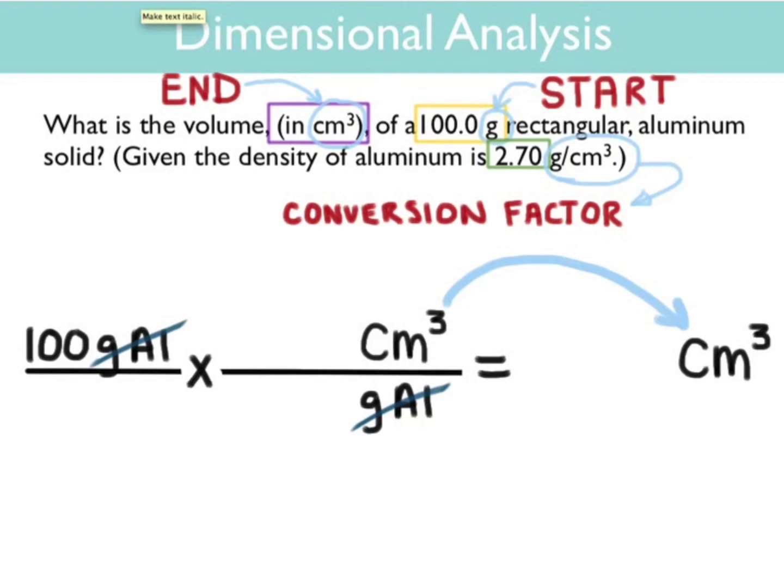We start with the initial number, cancel grams, and we have centimeters cubed on the top. Notice that the grams cancel and we're left with the unit that we're trying to find. So we're going to plug in the numbers appropriately. There are 2.7 grams per one cubic centimeter. So we're dividing by the 2.7, giving us an answer of 37 centimeters cubed.